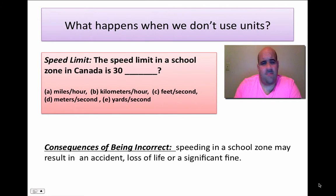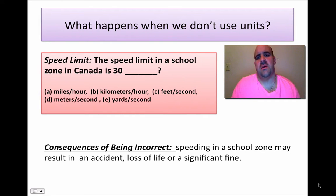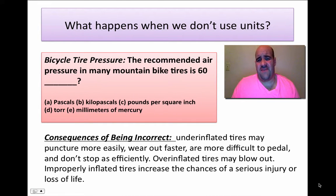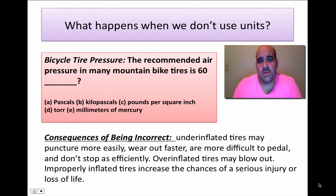The speed limit in Canada in a school zone is 30 blank — miles an hour, kilometers an hour, feet per second, meters per second, or yards per second. It's going to be kilometers per hour. Being incorrect could result in a fine, a loss of license, or even a loss of life. If you're inflating tires and your gauge is set for Pascals versus pounds per square inch, you'll under-inflate or over-inflate. Under-inflated tires puncture easier and are harder to slow down, and over-inflated tires could burst — especially dangerous going down a mountain.